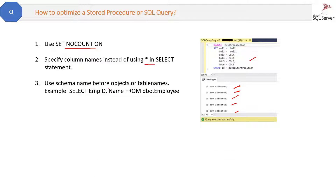The next way to improve performance is to use the schema name before object or table names. For example, if you have an Employee table, use dbo.Employee — dbo is the most common schema. If you have more than one schema, the query will check all schemas to find the table, which is not good for performance.